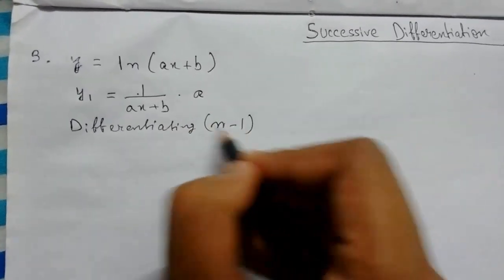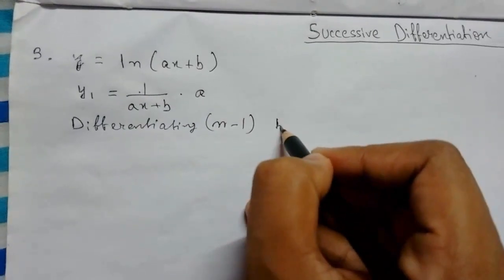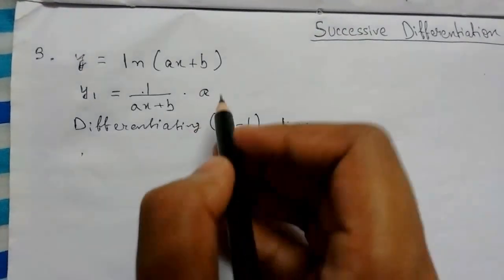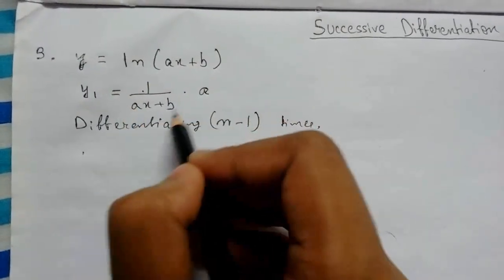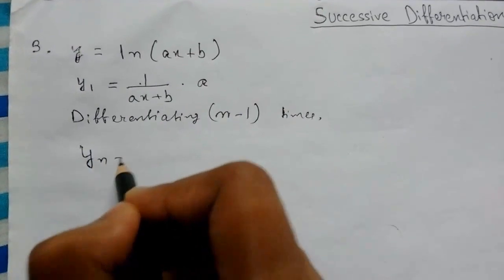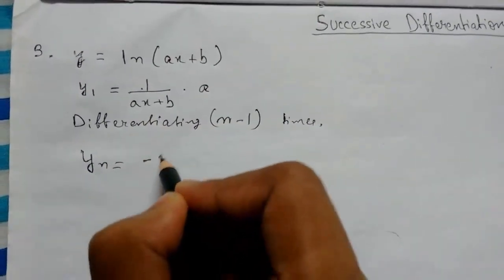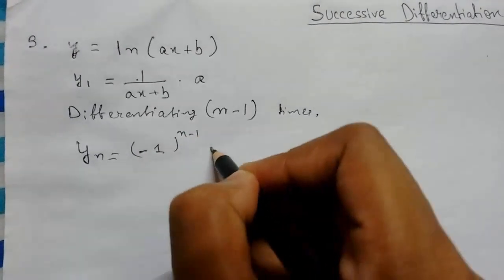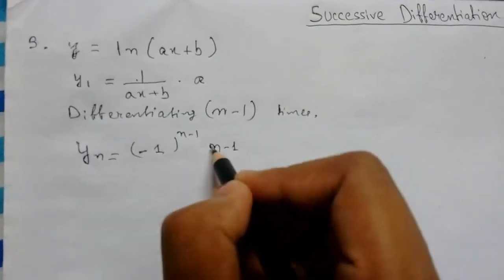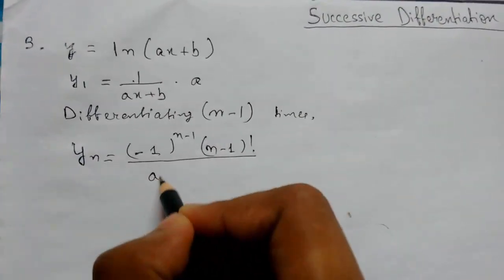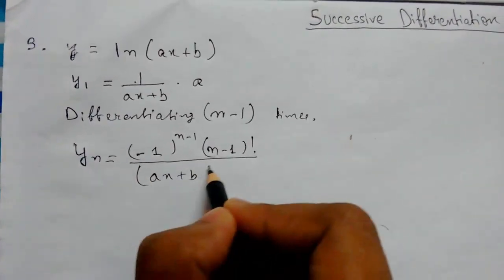Now differentiating it n-1 times, since we've already done it once, we can use the previous formula. This will be (-1)^(n-1) times (n-1) factorial over (ax + b)^n.